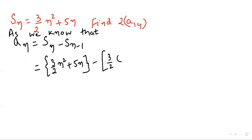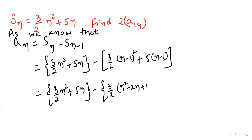We have to do 3 by 2 (n-1)² plus 5 into (n-1). Now we need to solve it, simplify. 3 by 2 n squared plus 5n minus 3 by 2 (n-1) whole squared, n squared minus 2n plus 1 squared, plus 5n.